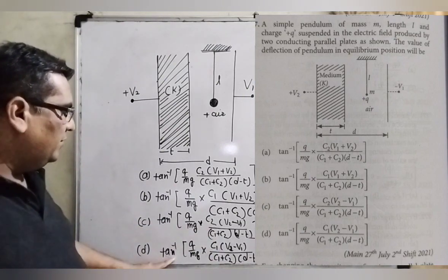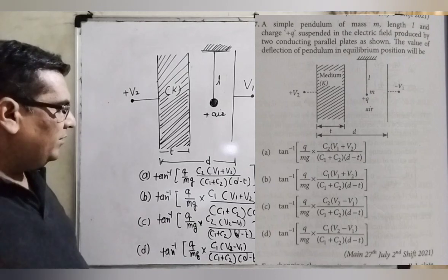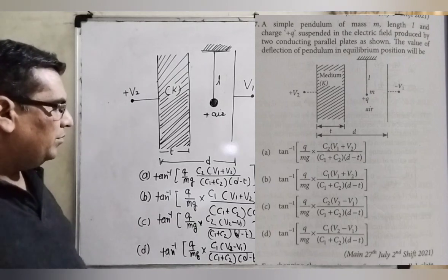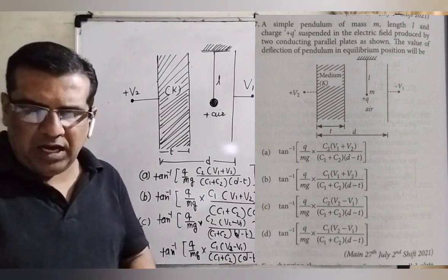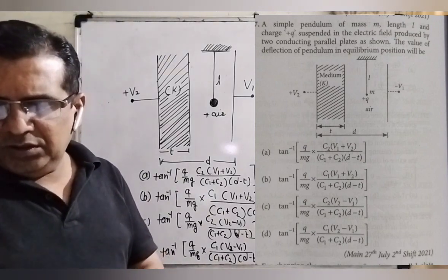Last D option: tan inverse Q by mg, C1 into bracket V2 minus V1 upon C1 plus C2 into bracket D minus d. And this question is asked in JEE Mains 2021.